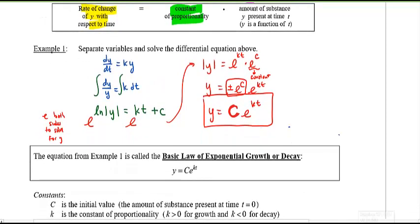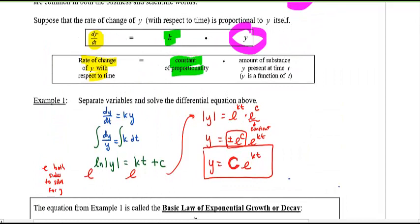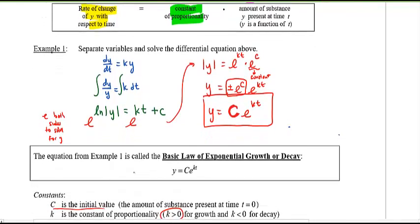So the basic law of exponential growth or decay is this equation: y equals C e to the kt. What do these variables represent? C is the initial value, the amount of the substance present at time t equals zero. k is the constant of proportionality. When k is bigger than zero you got exponential growth, and when k is less than zero you got exponential decay. Our independent variable is time and our dependent variable is y, the amount of the substance. If they talk to you about using the basic law of exponential growth or decay, that's this function here, and it comes from this differential equation.